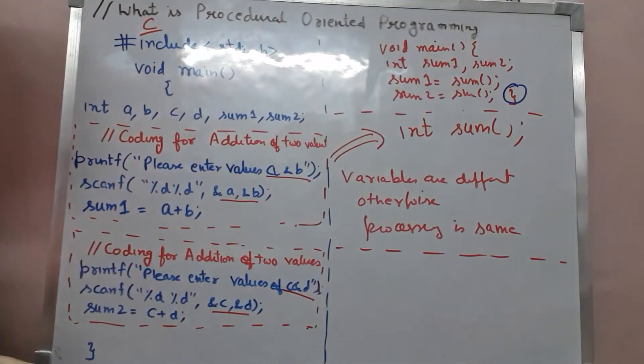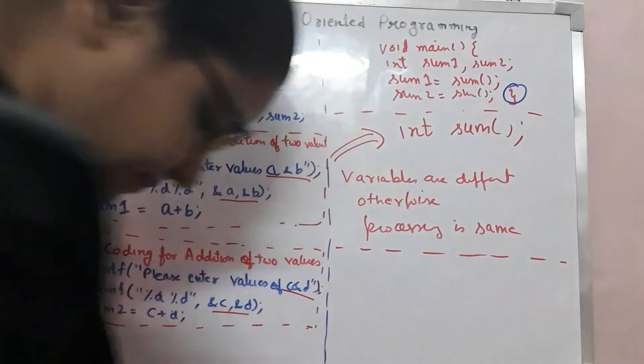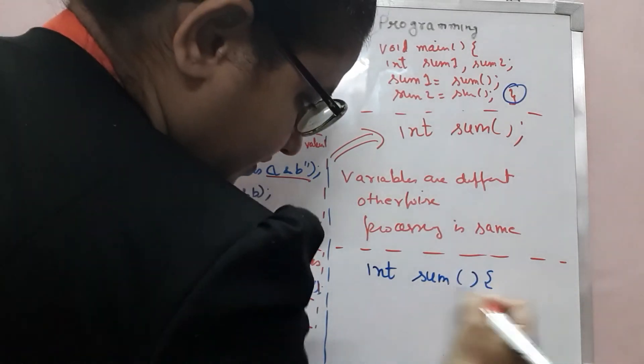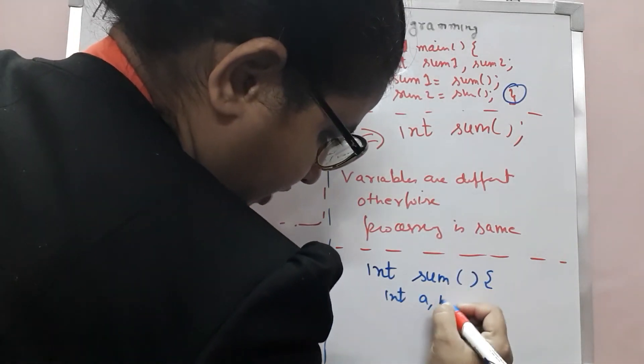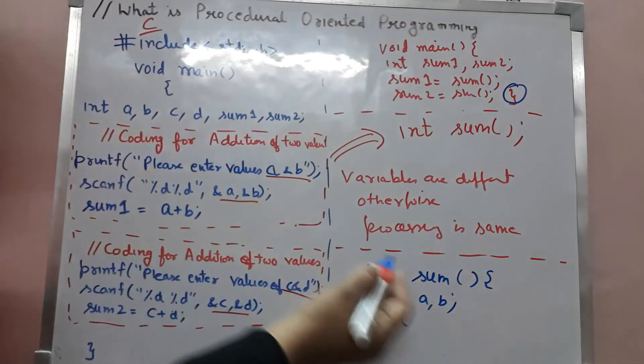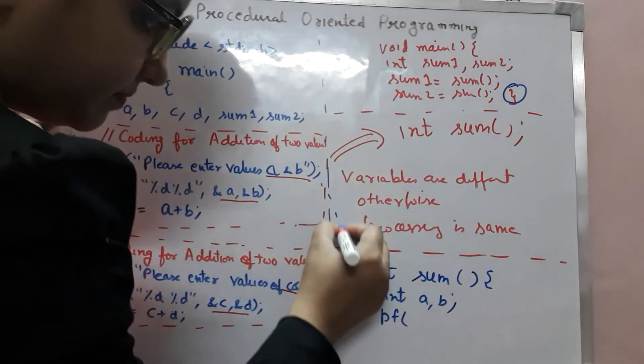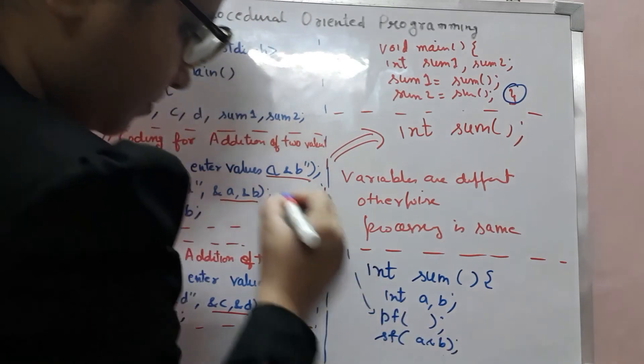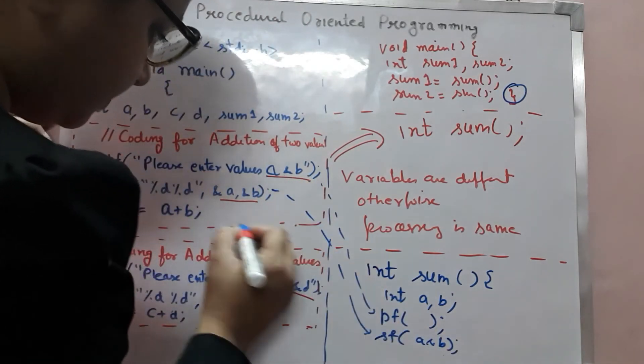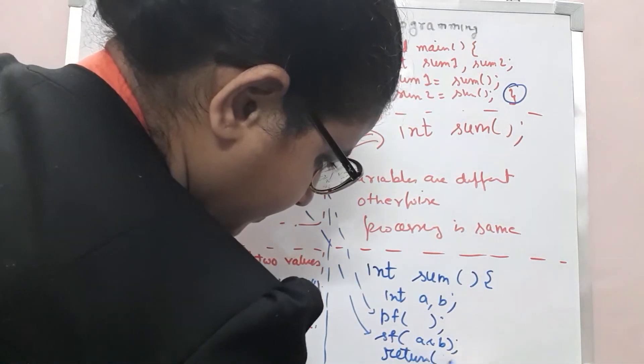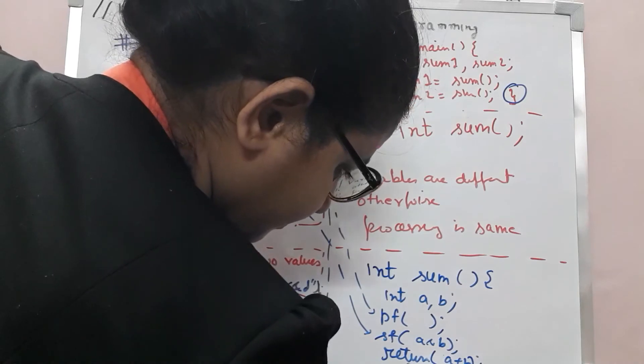And we can write function definition here as int sum, int A, B. Again, the same instruction. Printf, scanf for A and B, and return A plus B.